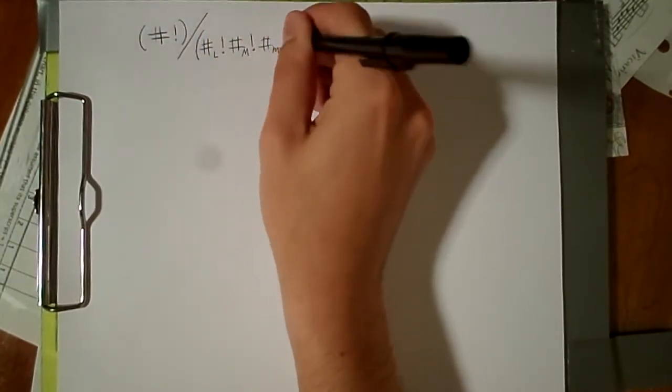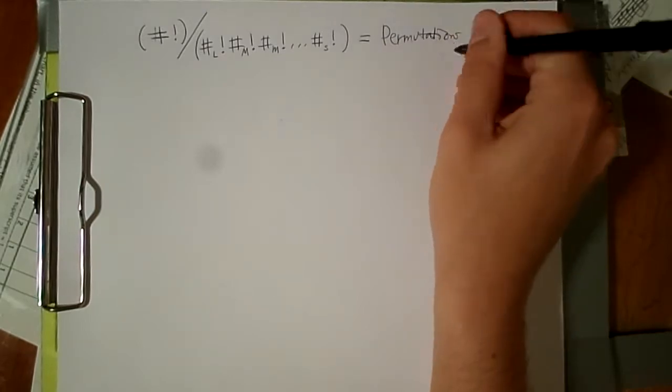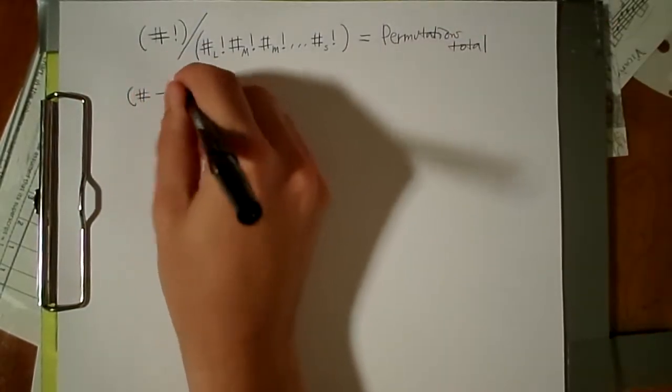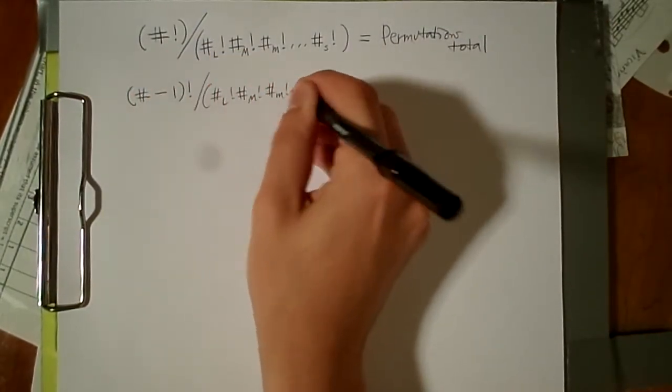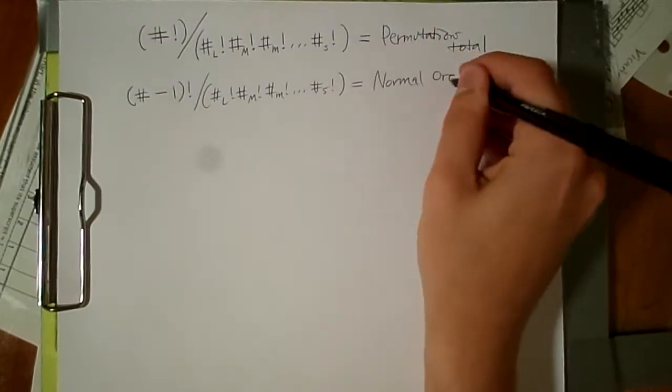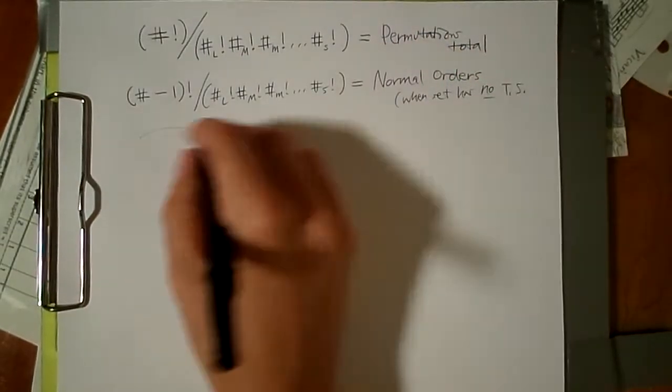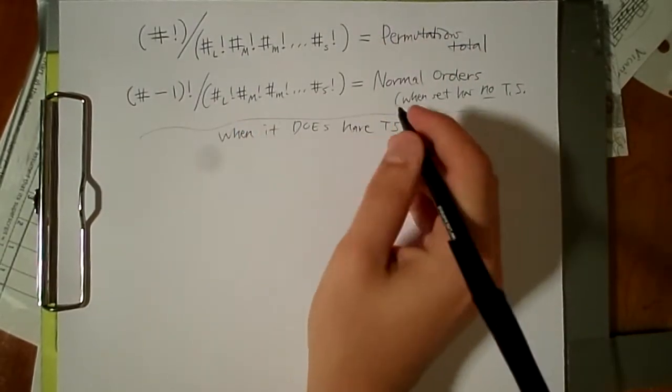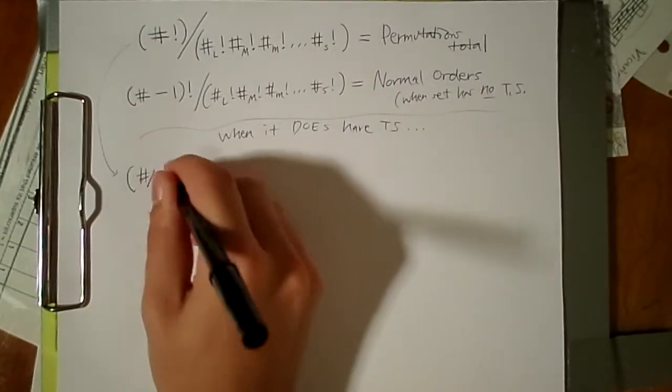In the last video, we established that a permutation could turn a scalar class set into a normal order. If we divided that permutation by the total number of tones, and dividing by number of tones is the same as putting tones minus one factorial on the top, as you can see here.